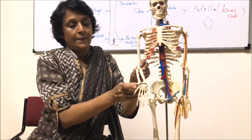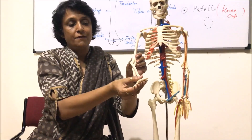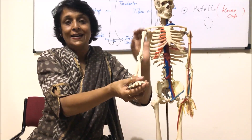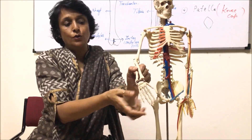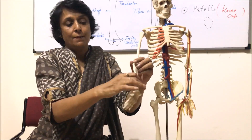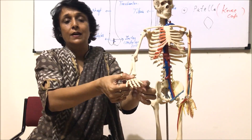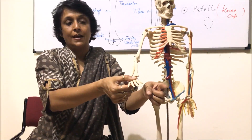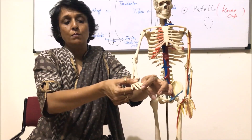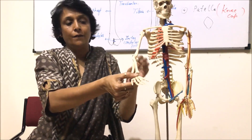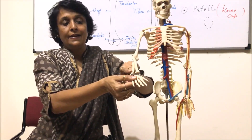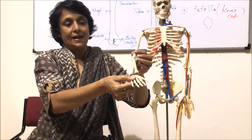In the forearm we have two bones. If we keep the hand like this, the bone which is towards the thumb is the radius. Out of these two bones, this one is the radius and the other bone is the ulna. We keep the hand so that the thumb comes on the inner side — these are the fingers: thumb, index finger, middle, ring finger, and little finger. The bone towards the thumb is the radius bone and the other is the ulna.